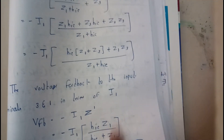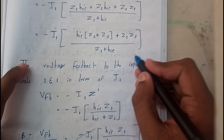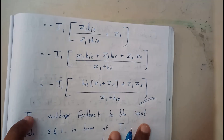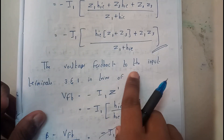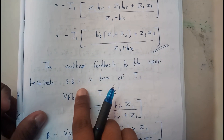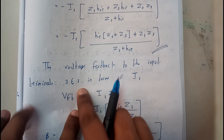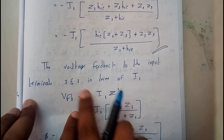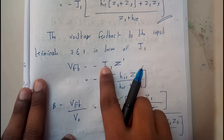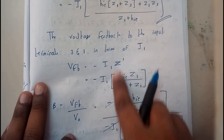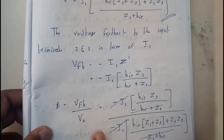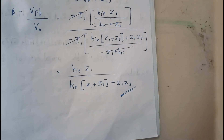We have the value of Z1, so substituting it we get a small equation for V0. The voltage feedback to the input terminal 3 and 1 in terms of I1 is: VFB equals I1·Z dash. We already have the value of Z dash so we substitute it. Then beta, which is VFB divided by V0, gives us the beta value.